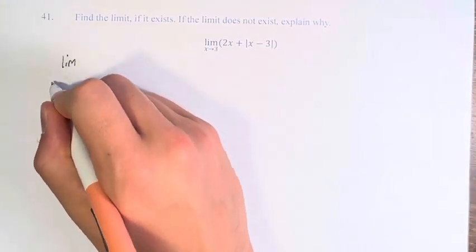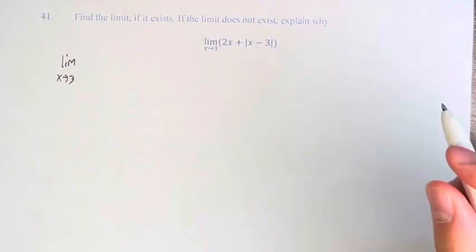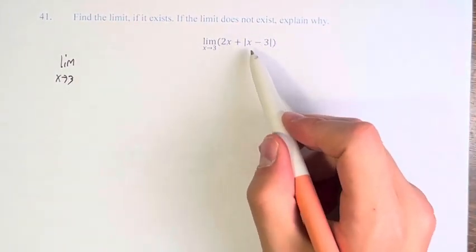So here we have the limit as x approaches 3 of 2x plus the absolute value of x minus 3.